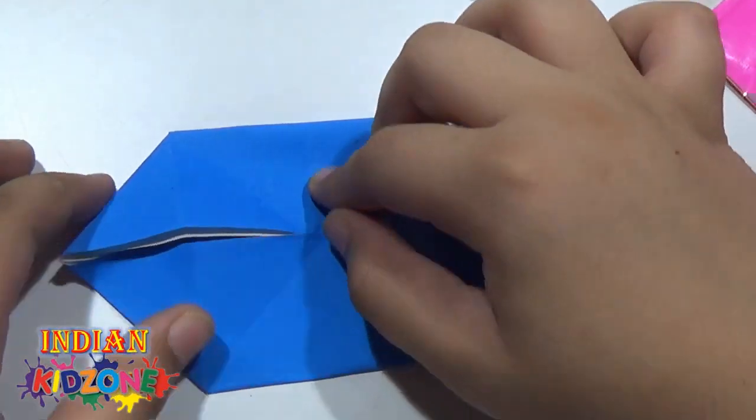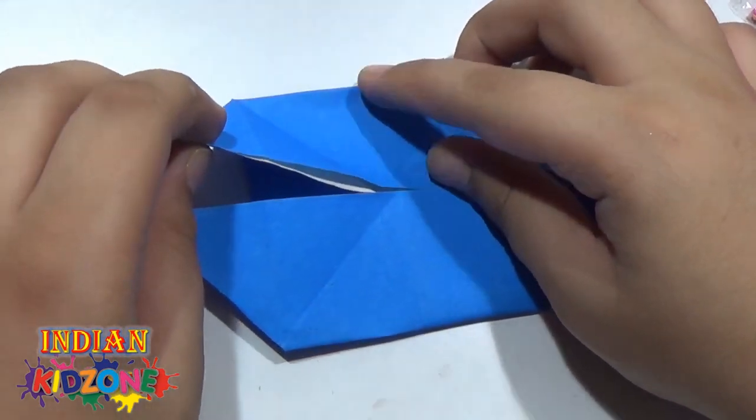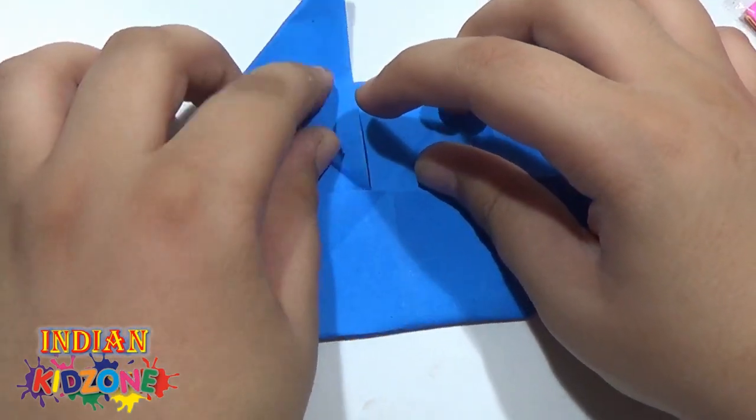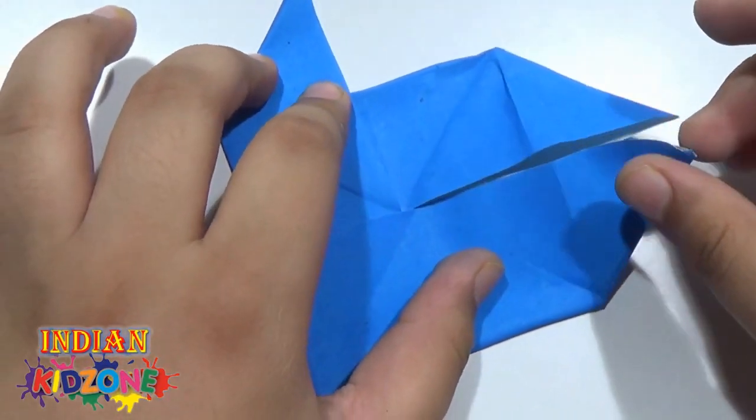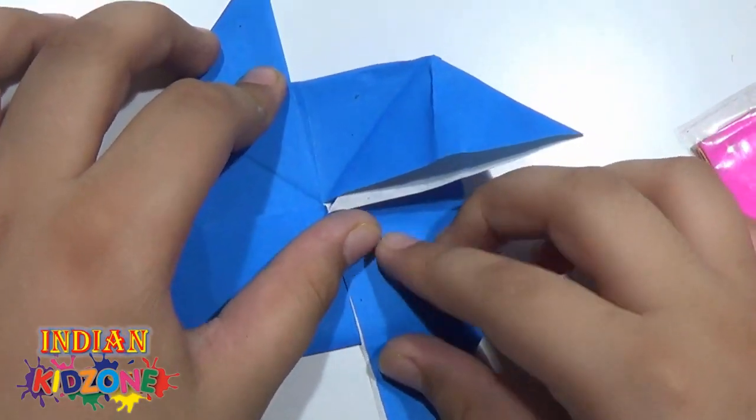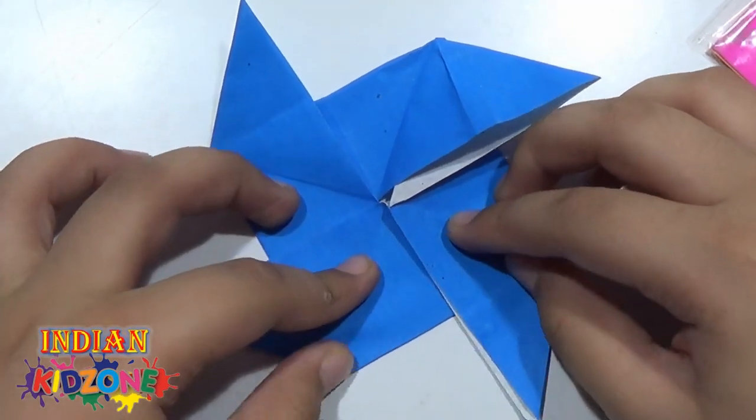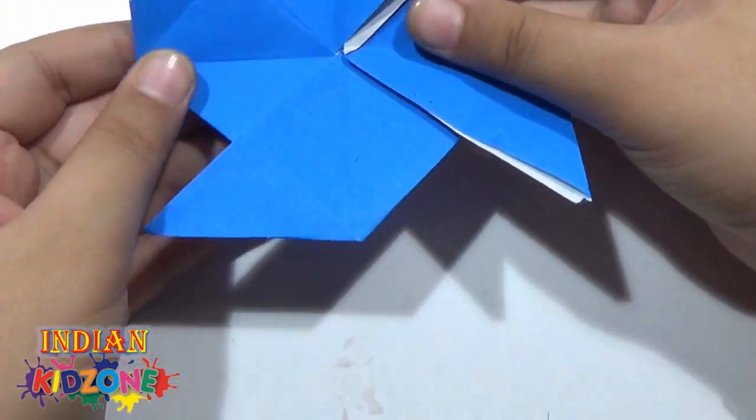Now fold this edge up so that it touches this edge. Like this. And fold this edge down. Like this. And we are ready with our pinwheel base.